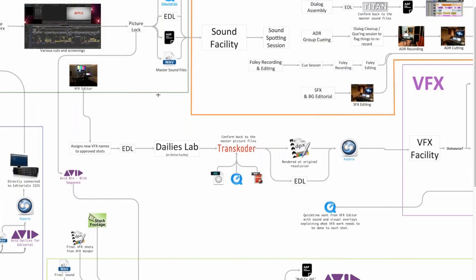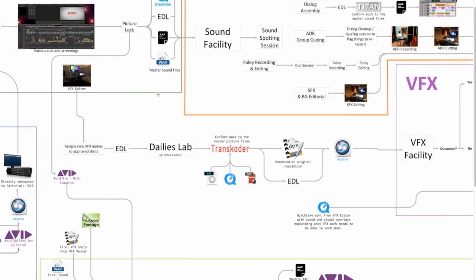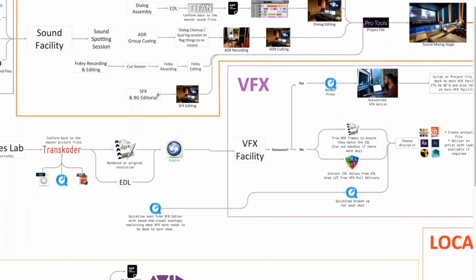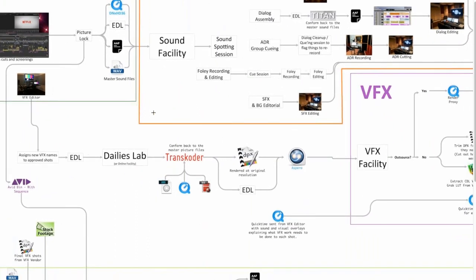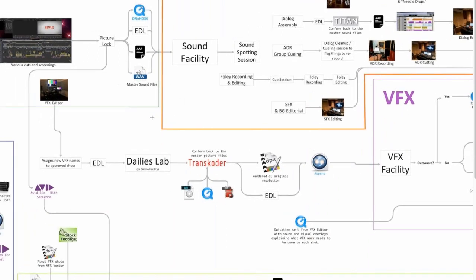Once we do that, we split up the shots based on the type of work and which vendor has a specialty — giving whoever is best equipped the work they can do best. Whenever we're going through the edit, we're not just pulling the plates — we're also pulling different kinds of reference material. A lot of times they will shoot a lens grid as a separate element during the day — ours was seven foot by four foot — and you just shoot a couple of frames of that. We use it to undistort the lens so that as our companies are working on the footage, they can work in a flat space.